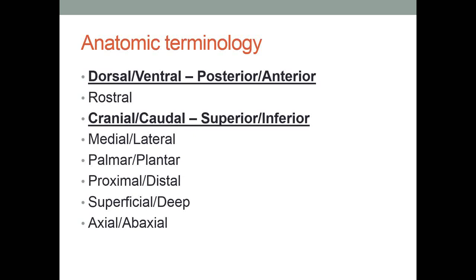I've tried to underline the similarities on this slide. In animals, when we talk about the dorsal aspect, we're talking about the back — synonymous with the posterior aspect of a human. The ventral surface — ventrum from Latin meaning belly — is the undersurface of the animal, analogous to the anterior surface of the human. So when you hear 'posterior ilium,' that's actually a dorsal ilium. Veterinarians have to convert posterior to dorsal and anterior to ventral. It's confusing initially, but you'll get used to it.